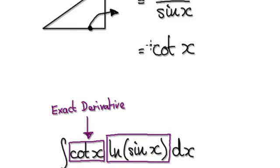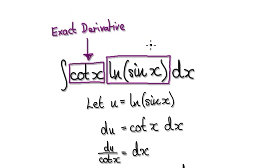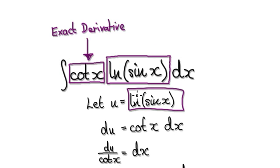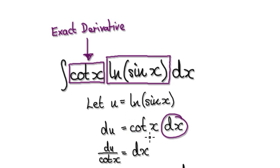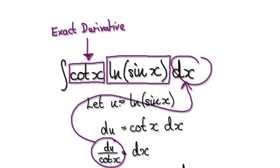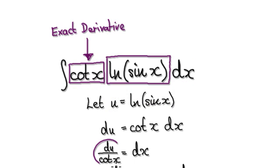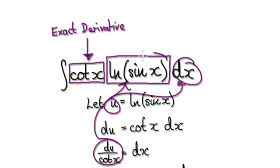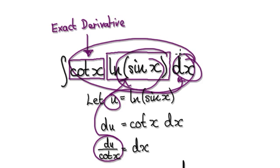This here is the exact derivative of this. Knowing that, let u equal this. Then du equals this. Rearrange it to make dx the subject, so dx equals this. If you put this into the dx here, and put u into this complicated thing here, this cot here will cancel out with this cot here.